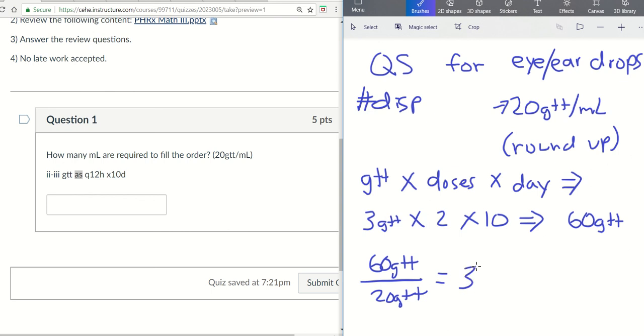So in this case, it's a nice round number. So 3 ml's. Required at least 3 ml's to dispense to this patient for a 10-day supply.